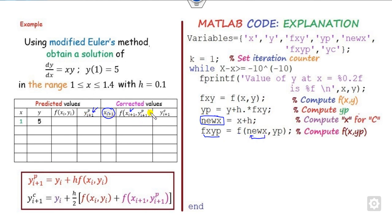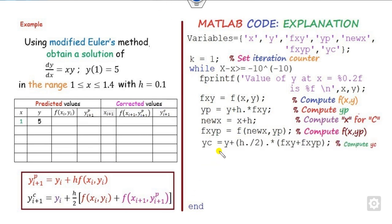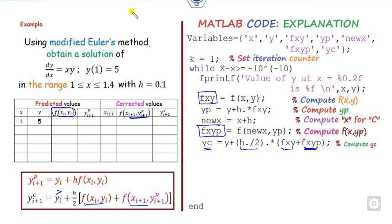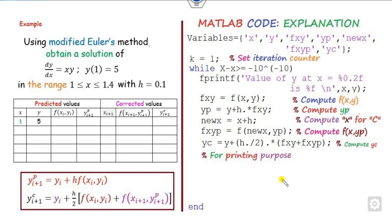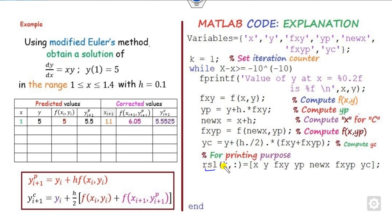Finally, compute the corrected value y_{i+1,c}, which I call yc. This expression is y plus (h/2) times [f(x_i, y) plus f(x_{i+1}, y_p)], using the stored variables fxy and fxyp. Once all values are computed, print them. Since k is the first column, I can write the result row as: k, x, y, fxy, yp, and so on.